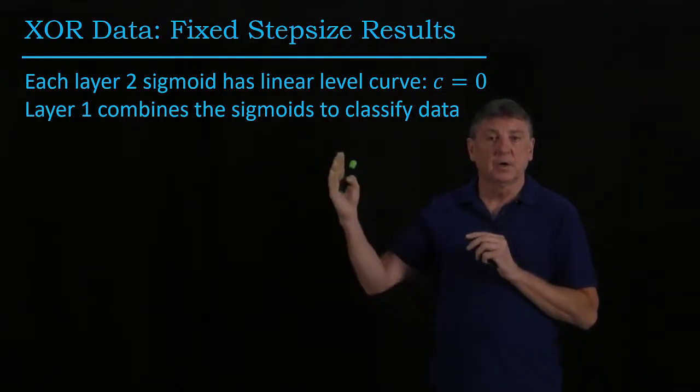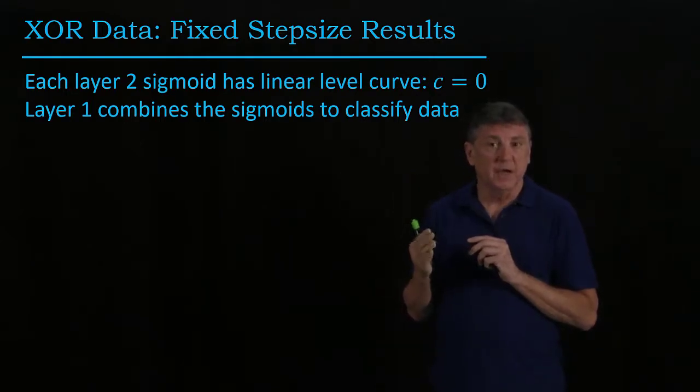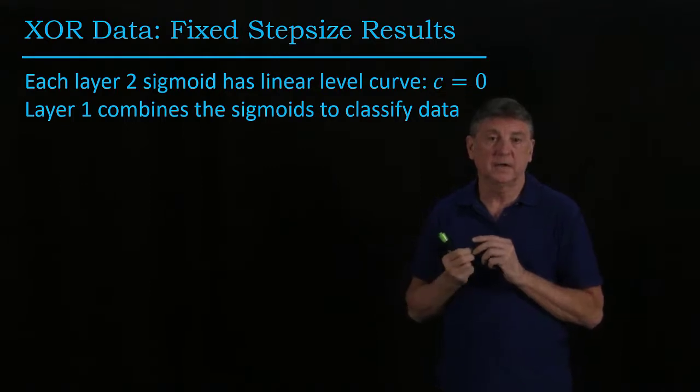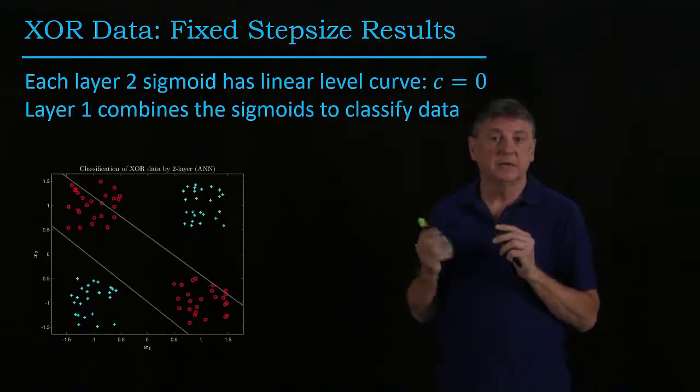So there's a hyperplane for hidden neuron number one, a hyperplane for hidden neuron number two, and then these have sigmoid activation functions that are applied to them, and here is the result.